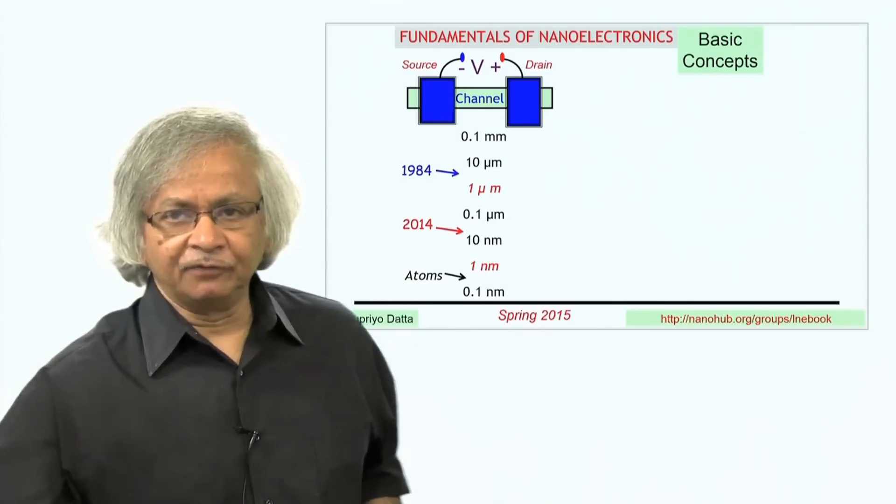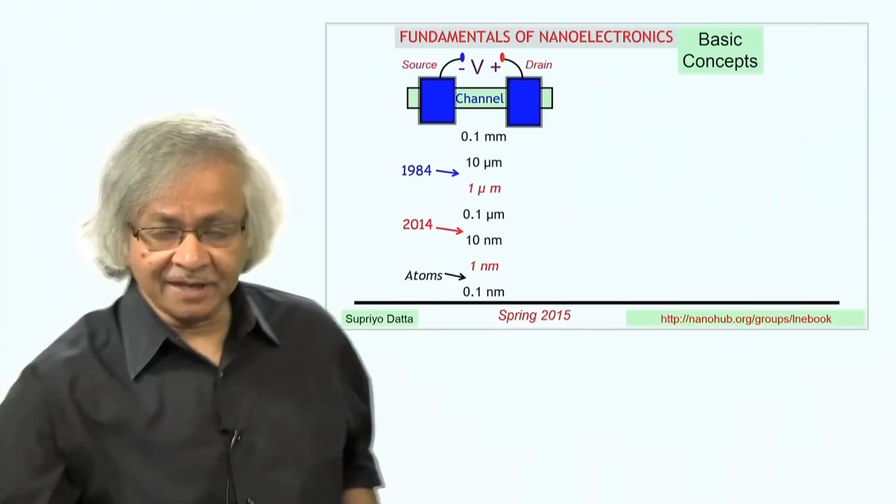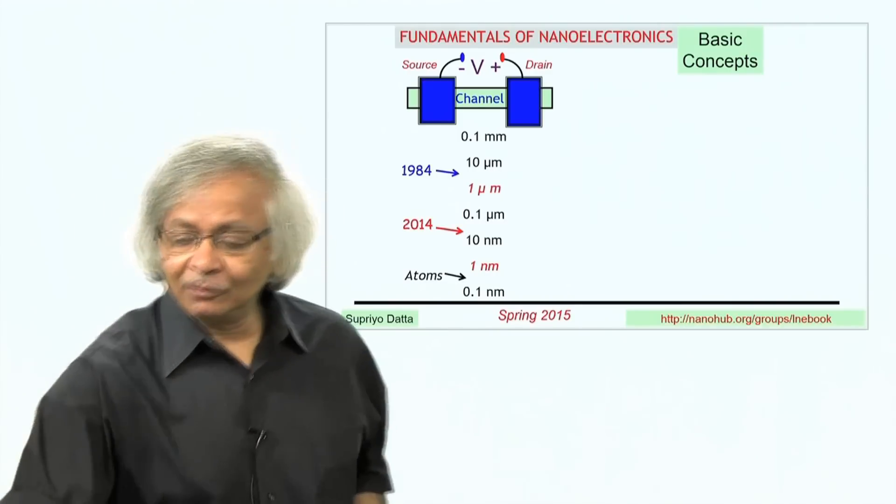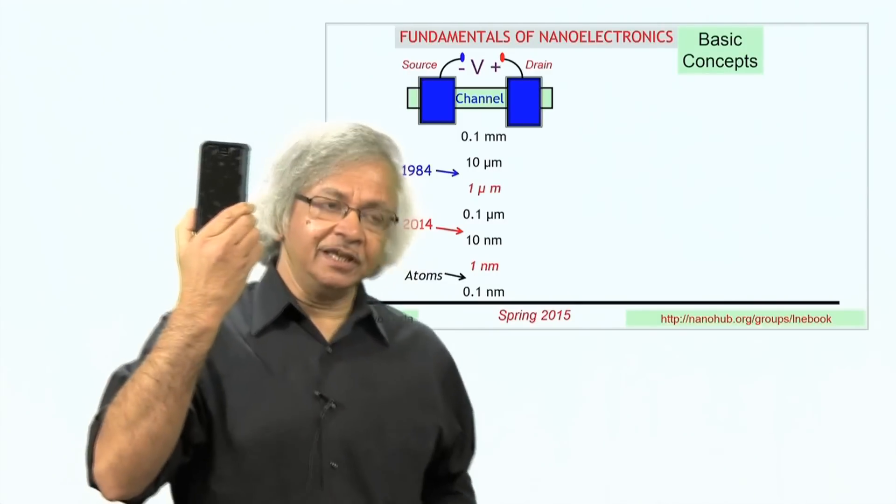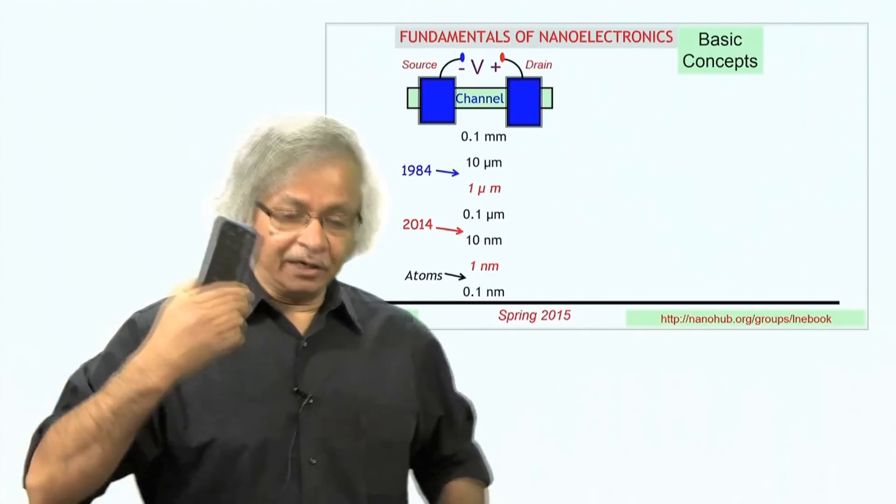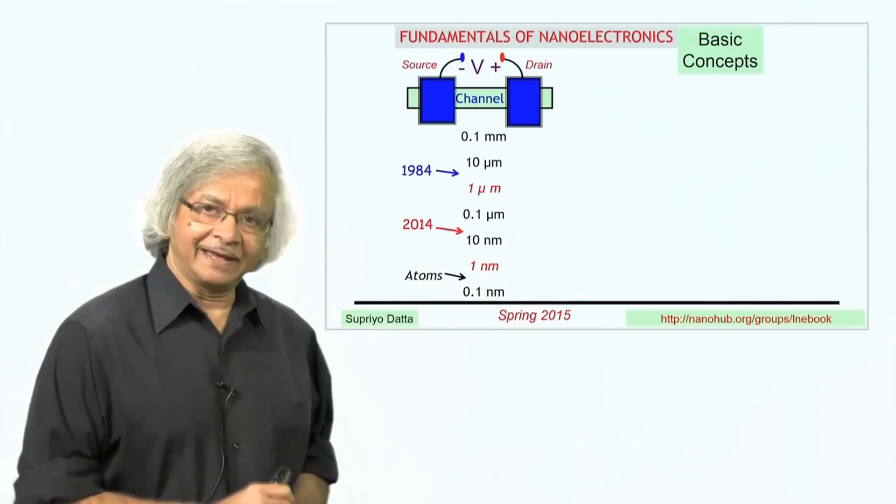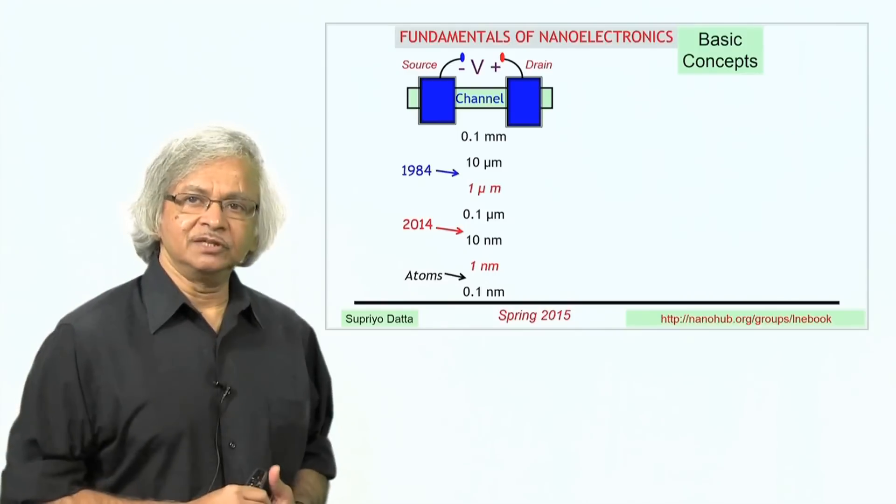Today's smartphones are just amazing things, and what allows them to do all these amazing things is that one of these actually contains over a billion transistors. The reason you can pack a billion transistors into a small thing like that is that each one is extremely small.